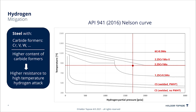Had the pressure been lower, we could have used one and a quarter chrome, half moly. Therefore, the shell is always made of low alloy steel, either one and a quarter chrome half moly or two and a quarter chrome one moly, to have sufficient resistance to high-temperature hydrogen attack.